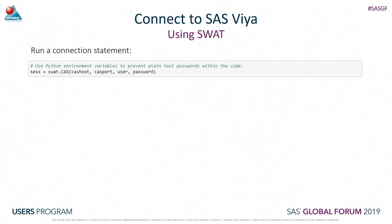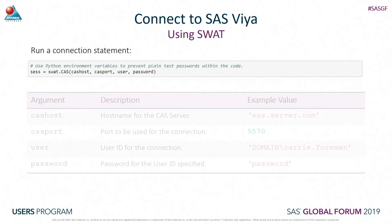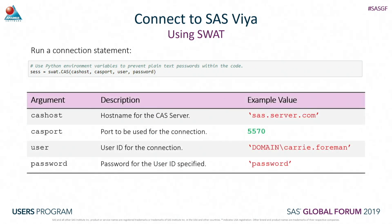Now we've imported our packages into our Python session, we can connect to SAS Viya. To connect, all we need to run is a simple connection statement which has four main arguments: the CAS host name - the name of our SAS Viya server - a port (by default this will be 5570, but talk to your administrator if you've got a custom configuration), and then a user ID and password to secure the connection.